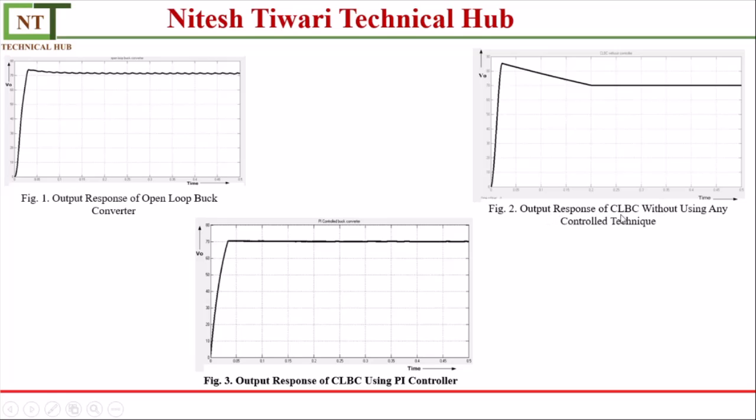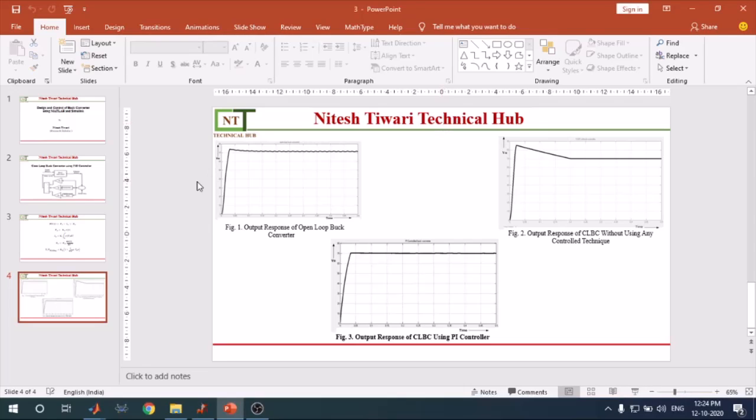In closed loop Buck converter without any control technique, one more problem is coming that at the starting your voltage will increase to the highest value and after that it will reduce. And this problem we have to nullify with the help of using this PI controller technique and we got a smooth voltage. It means your PI controller is better than closed loop Buck converter without any control technique or open loop converter technique. So in the next video we are talking about the closed loop Buck converter using fuzzy logic controller. So thank you everyone, thank you for seeing my videos, thank you.